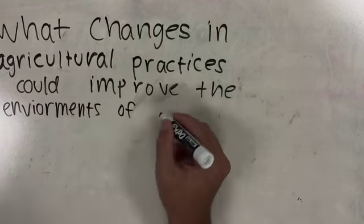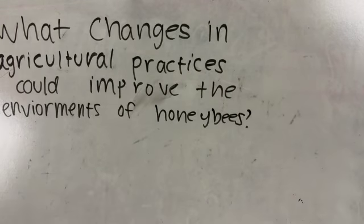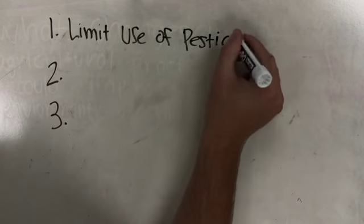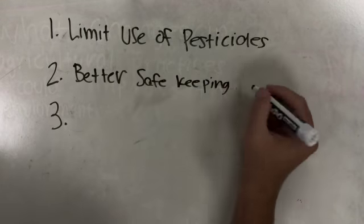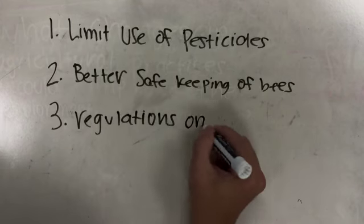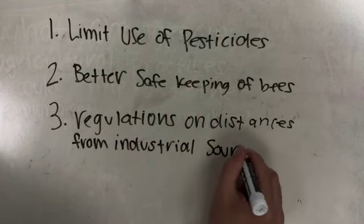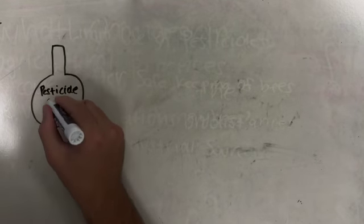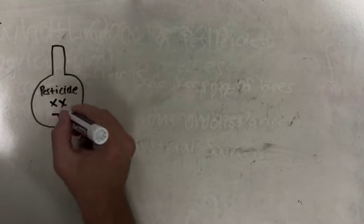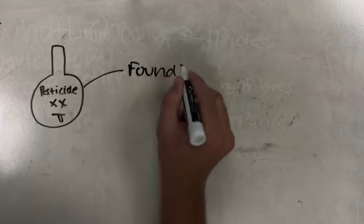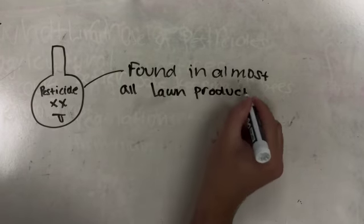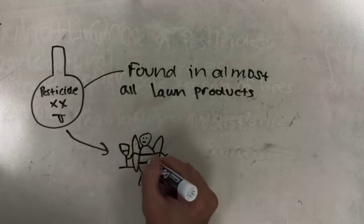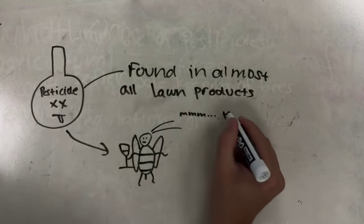There are three changes in agricultural practices that could improve the environment of honeybees: limiting the use of pesticides, having better safekeeping of bees, and regulating distances of beekeepers from industrial sources. Pesticides commonly found in lawn and garden products and used in agriculture are known to be hazardous to bees — some killing bees outright, and others with subtle effects that reduce a bee's ability to thrive, ultimately leading to death.